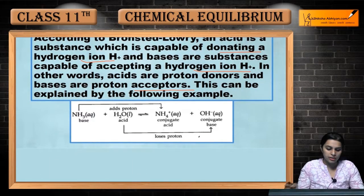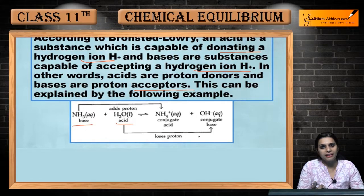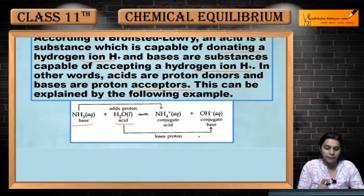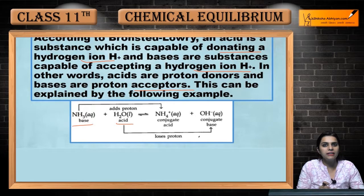In the previous reaction, NH3 is the base and H2O is always acid and base because it is amphoteric. Now, what is the base definition? It will accept the proton. And what is the acid? It will donate the proton.